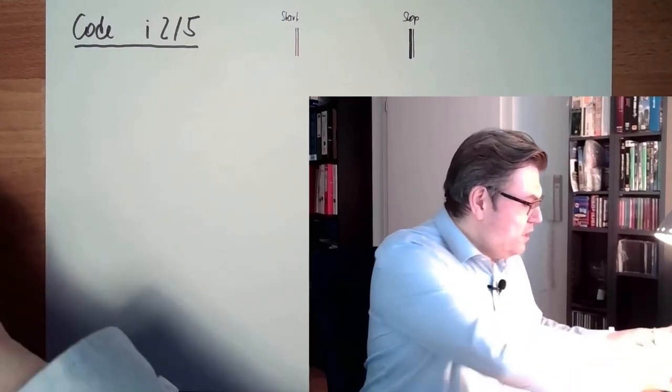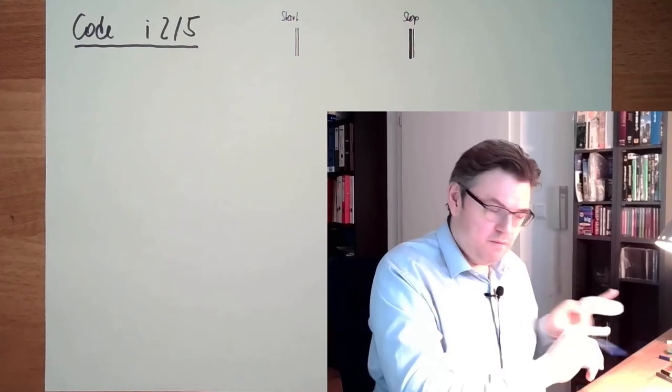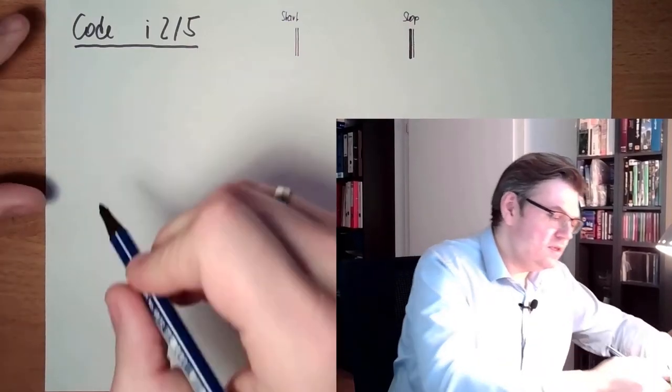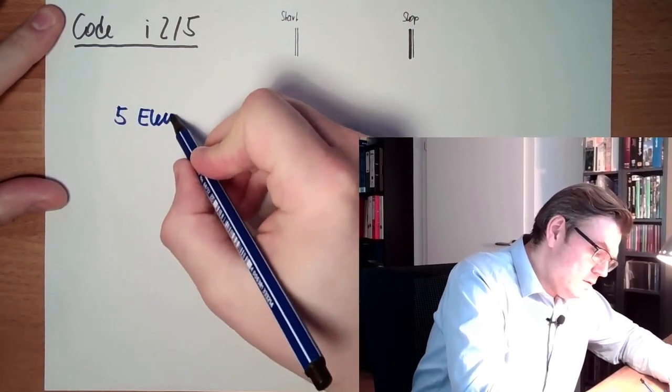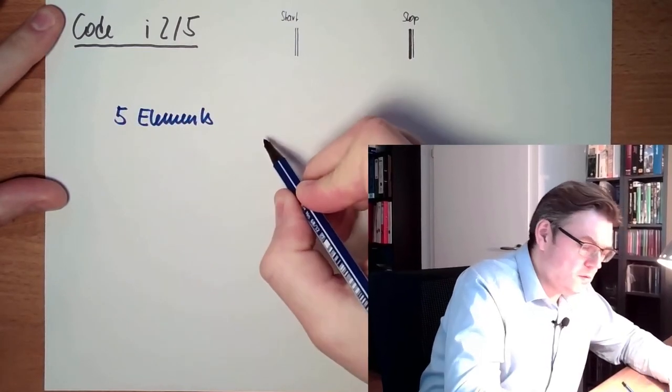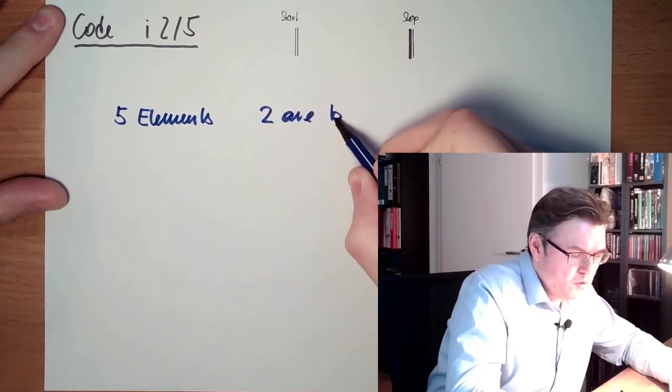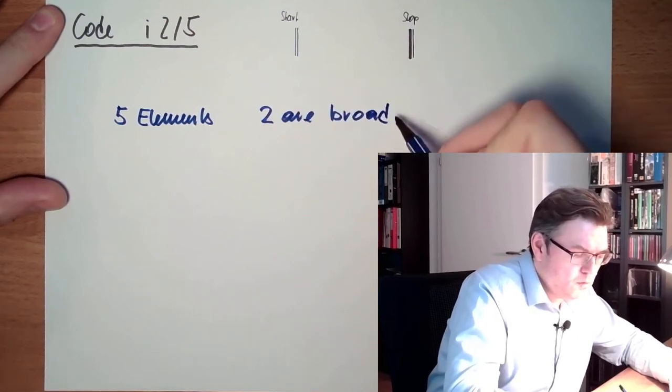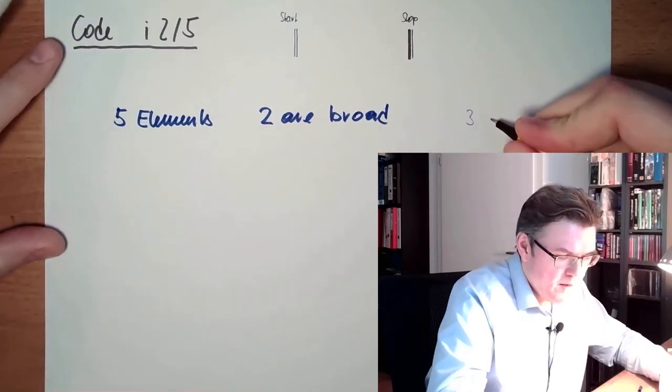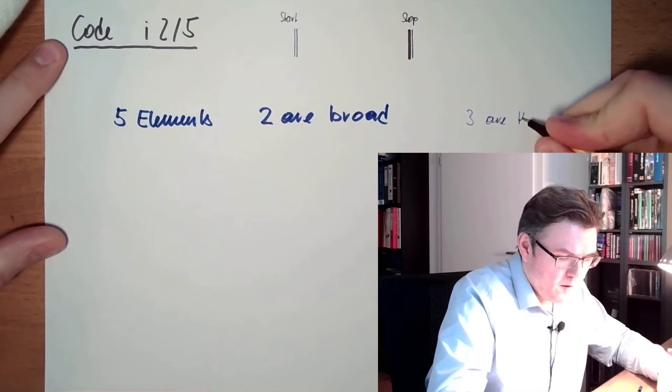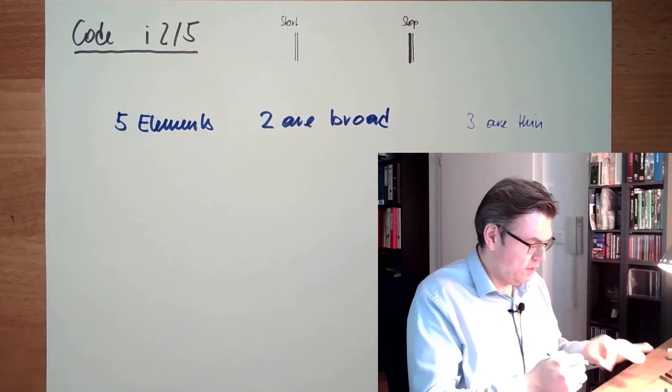And each code element, as the name says, consists of five elements, two abroad, three are thin. That's the rule.